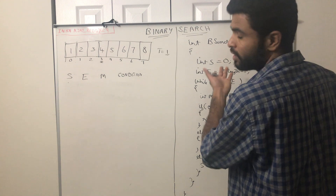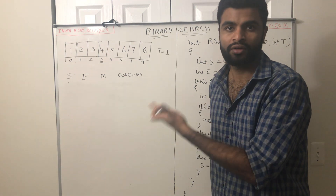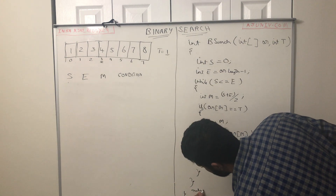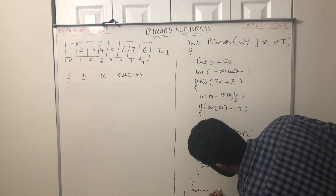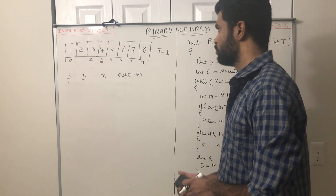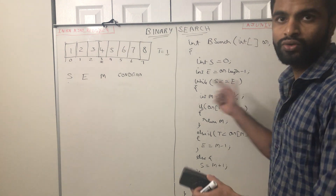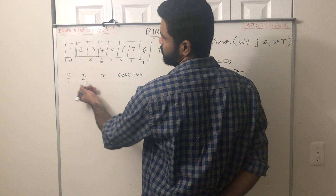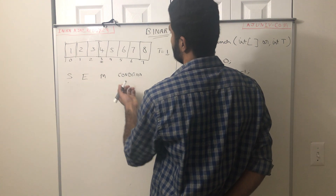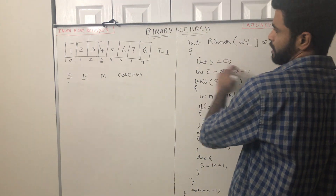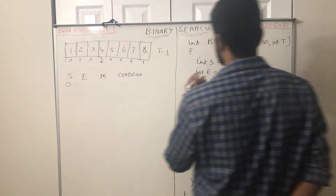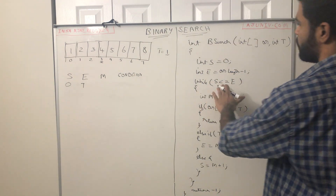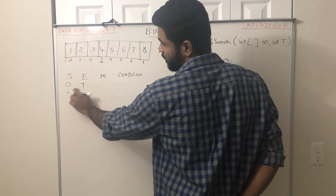Once the loop is completed and if you haven't found the target in the array, that means the target is not present, and I return minus 1. This is the second solution of the binary search algorithm. Let me walk you through the code. Here you can see the start index, the end index, the middle element, and the condition. For the first time, start is 0 and end is 7.